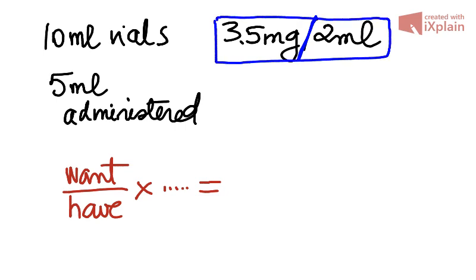So this is all about the drug: 3.5 mg dissolved in 2 ml is the concentration. But of course, the 10 ml vials is the full vial volume. We don't need that for the calculation. We need the concentration.